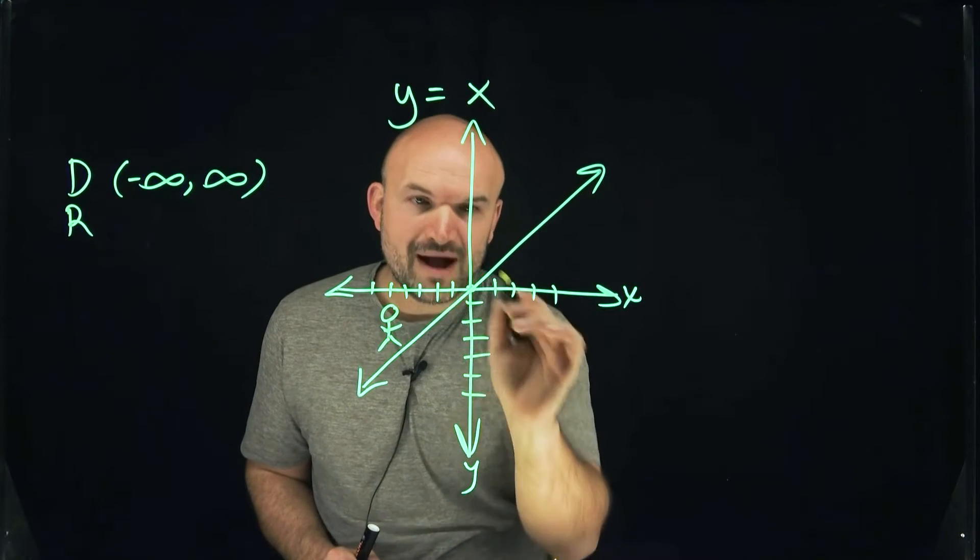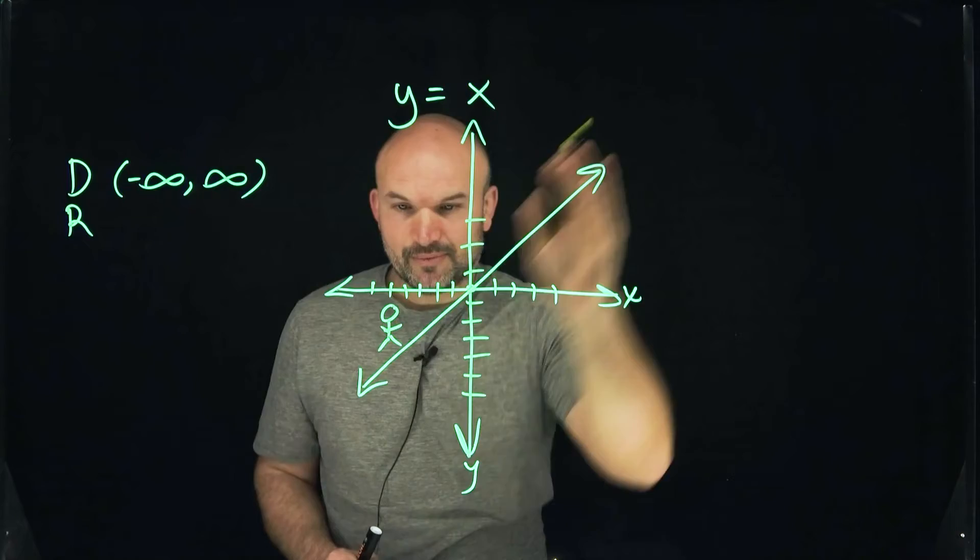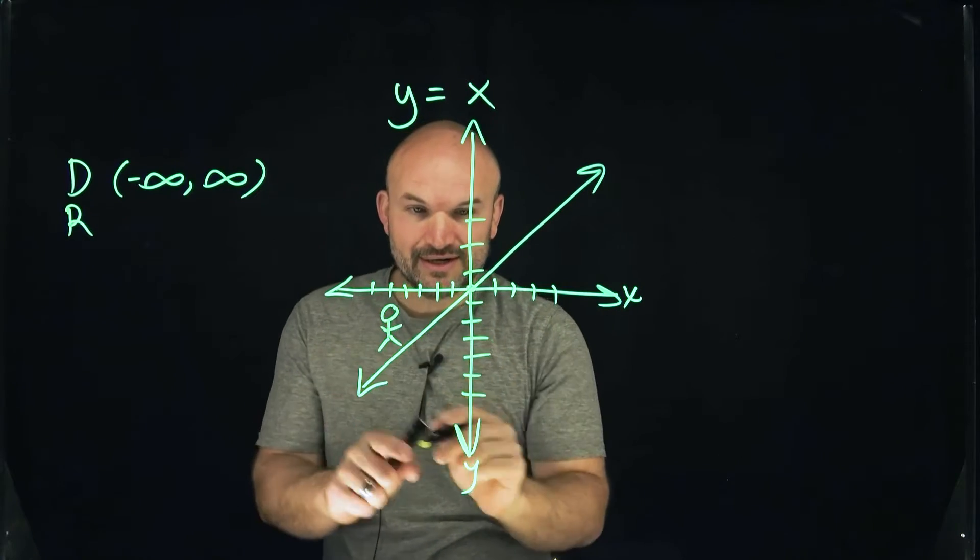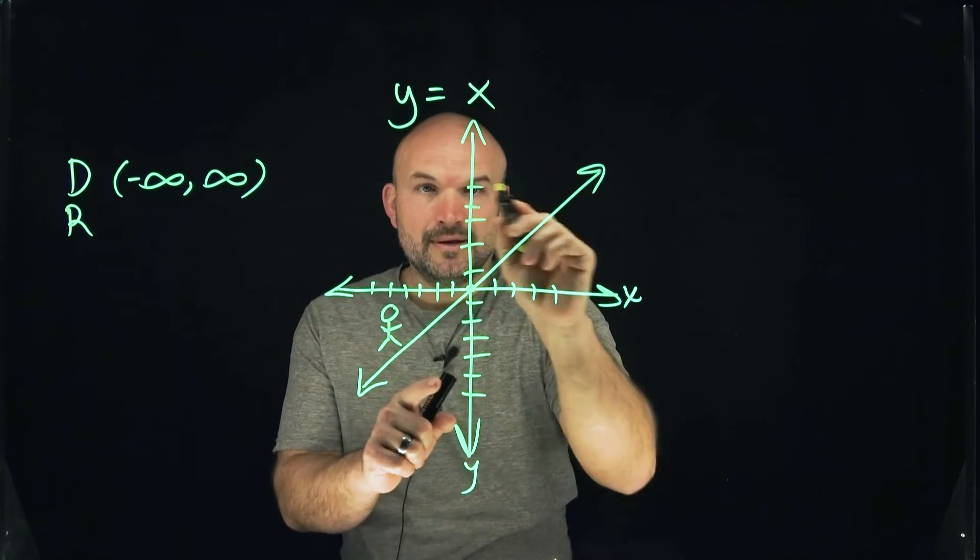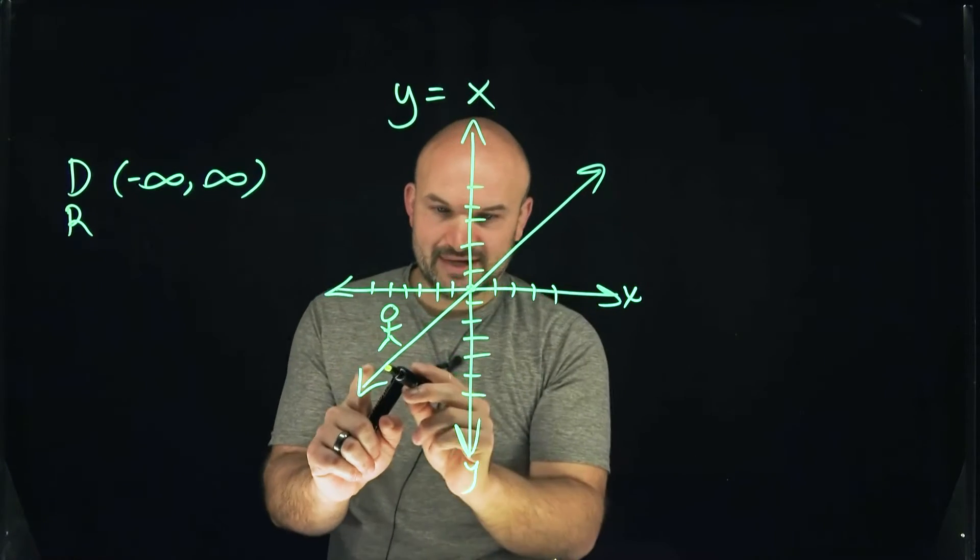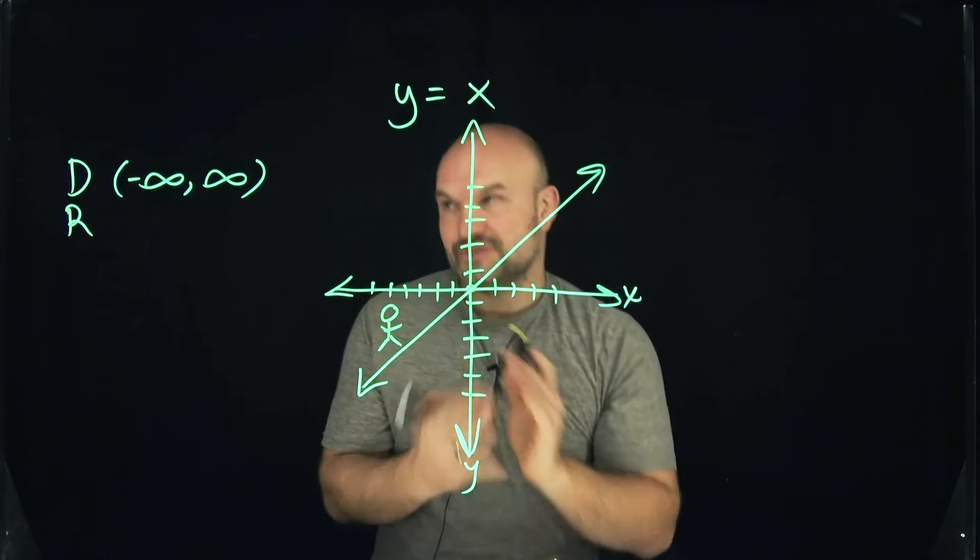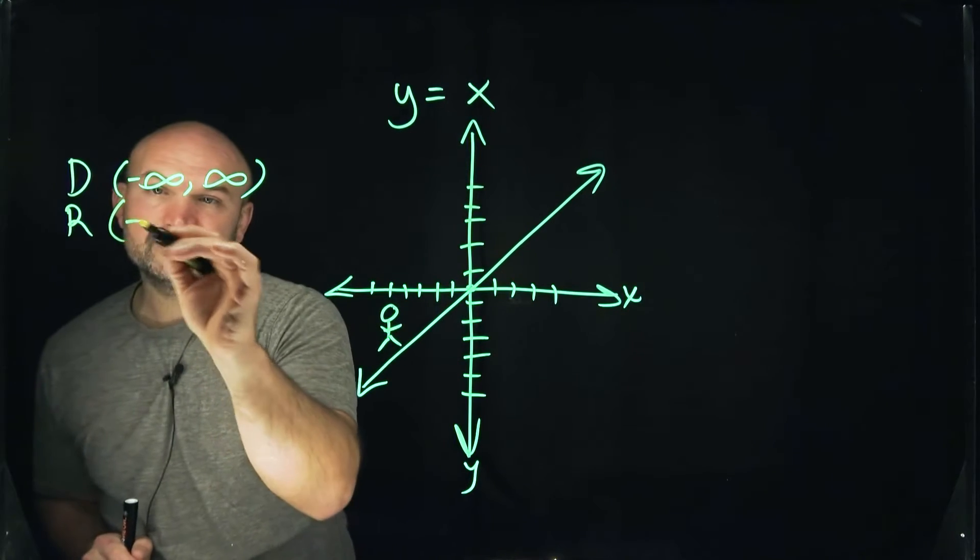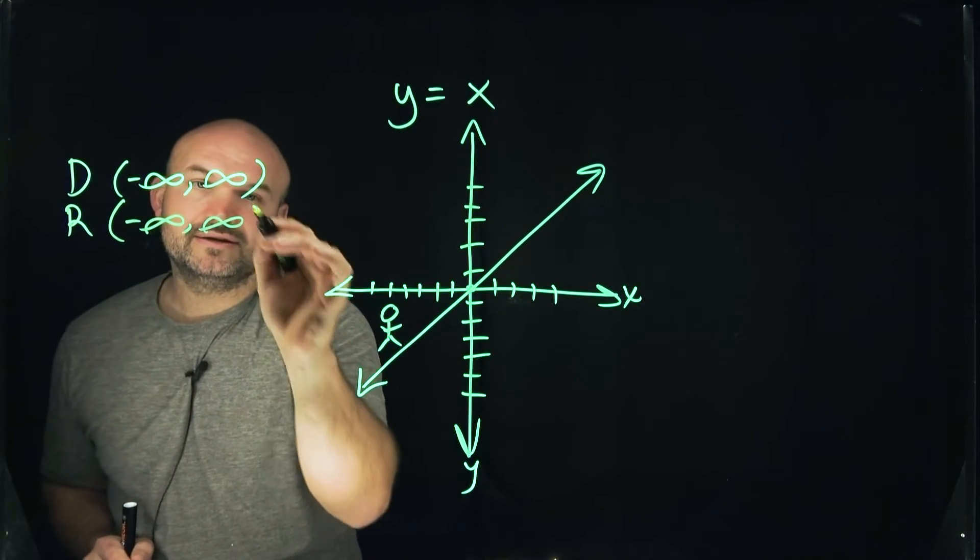If we were to walk along this whole graph, even though it's going infinitely up and infinitely down, we would address each and every one of these y values as we're going up or down. This little person is going to measure at each y value. Therefore, the range in this case is also going to be negative infinity to infinity.